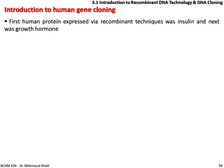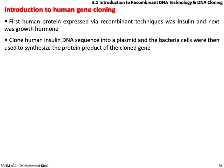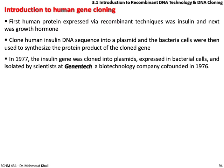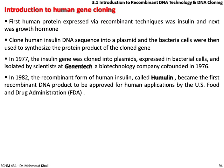Introduction to human gene cloning: the first human protein expressed via recombinant technique was insulin, followed by growth hormone. Scientists cloned the human insulin DNA sequence into a plasmid, and bacterial cells were used to synthesize the protein of interest. In 1977, the insulin gene was cloned into a plasmid and expressed in bacterial cells by scientists at Genentech, the first biotechnology company co-founded in 1976 to produce insulin. In 1982, the recombinant form of human insulin, called Humulin, became the first recombinant DNA product approved by the FDA.